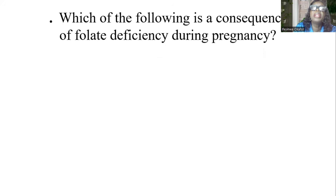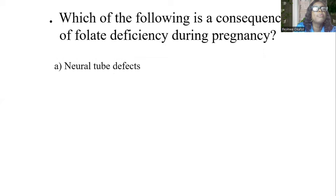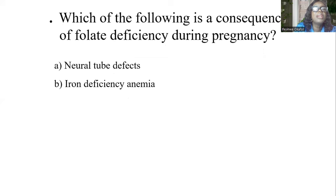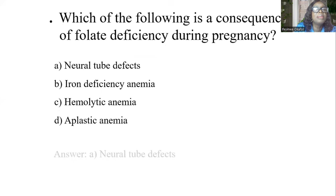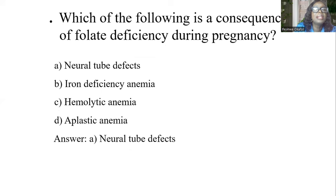Which of the following is a consequence of folate deficiency during pregnancy? A, neural tube defects. B, iron deficiency anemia. C, hemolytic anemia. D, aplastic anemia. And the answer is A, neural tube defects.